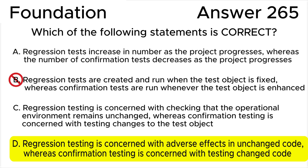Answer B is not correct because it is the other way around — confirmation tests are created and run when the test object is fixed, and regression tests are ideally run whenever the test object is enhanced or changed.